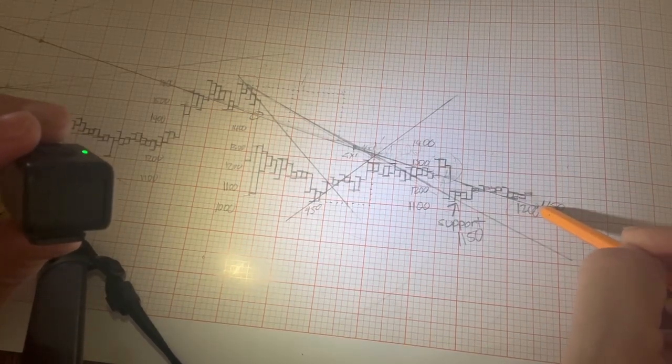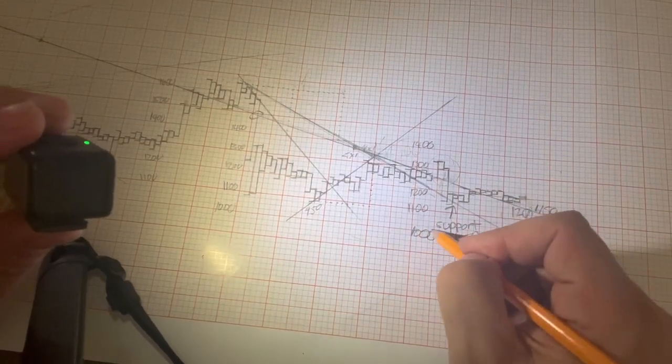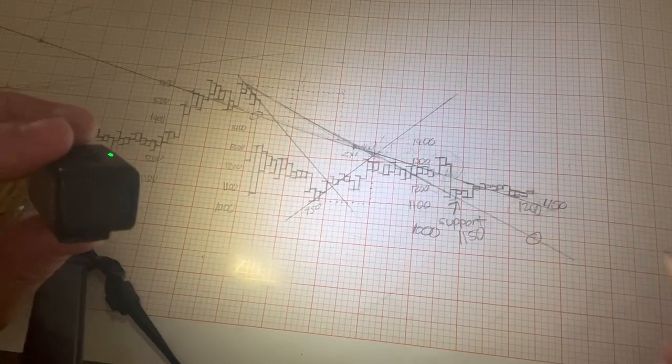Now, of course, if ETH takes out $1,150, you know, it looks like there's really nobody home until this point here at $1,000.